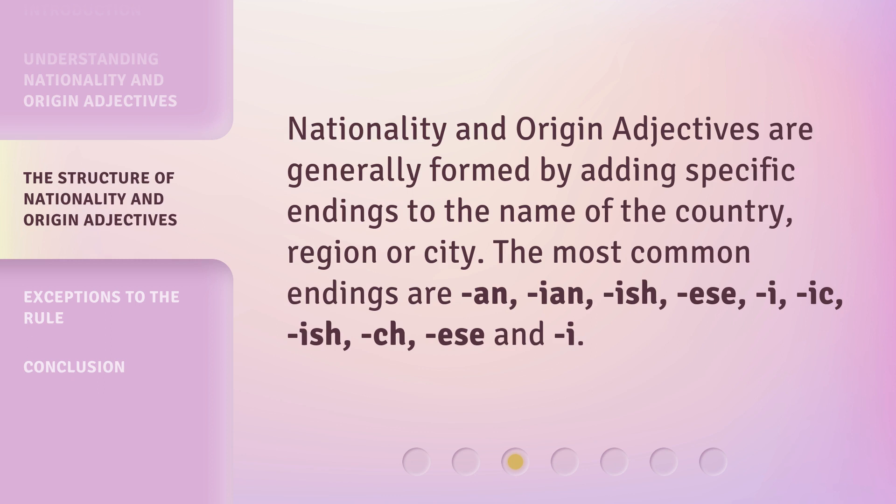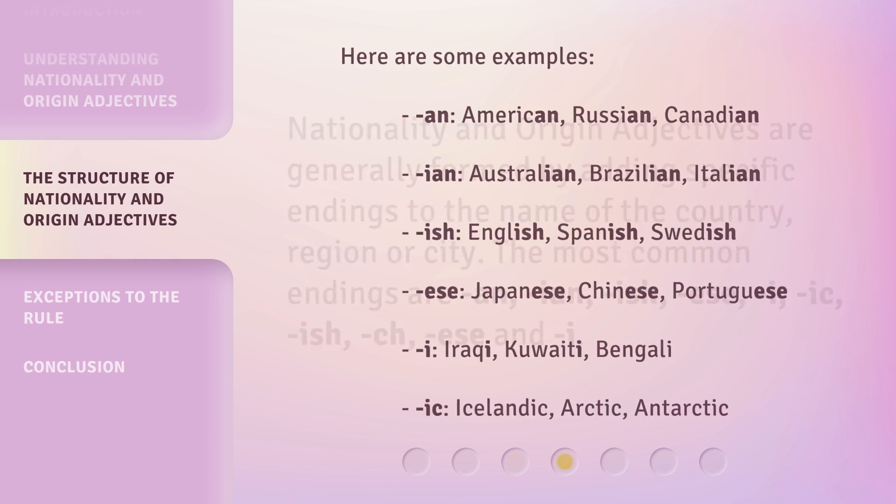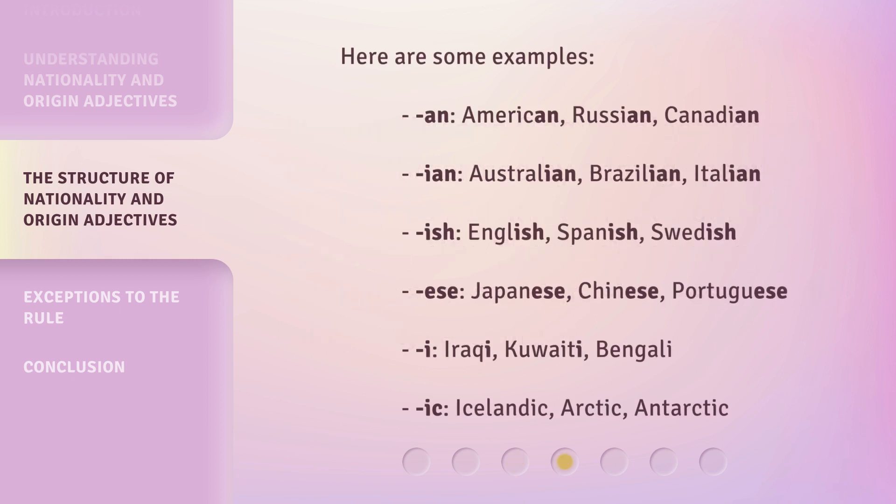Nationality and origin adjectives are generally formed by adding specific endings to the name of the country, region, or city. The most common endings are: -n, -ian, -ish, -ese, -i, -ic. Here are some examples. For -n: American, Russian, Canadian.